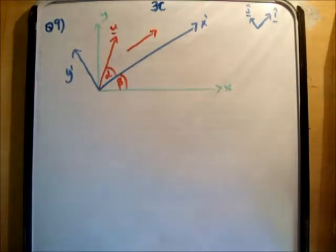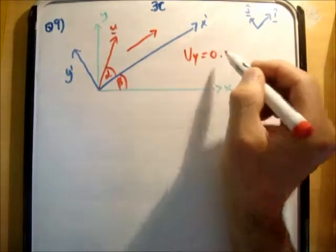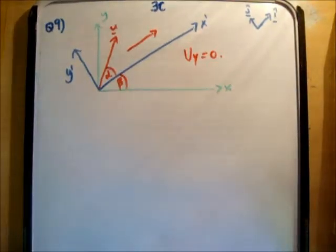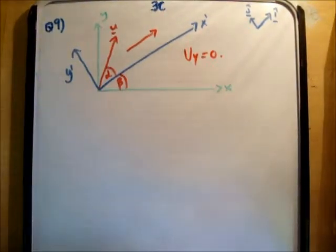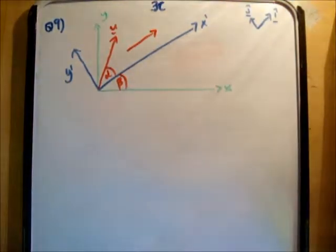So the answer basically is to find out the time when v sub y is equal to zero. Because there is no component in the j hat unit vector direction.